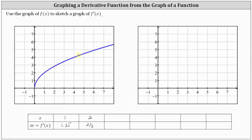Notice that as we move to the right, the slopes of the tangent lines remain positive but decrease. Let's sketch the tangent line at x equals four. From the point of tangency, if we move up one unit and right two units, we find another point on the tangent line. The slope of the tangent line and the derivative function value at x equals four is 1/2.